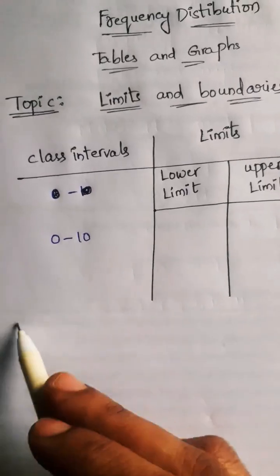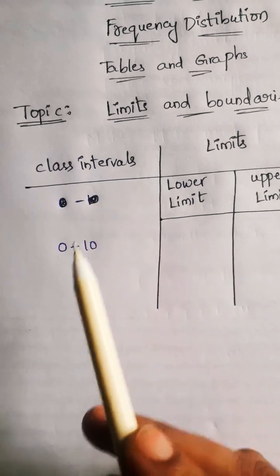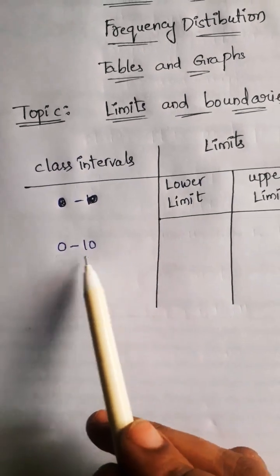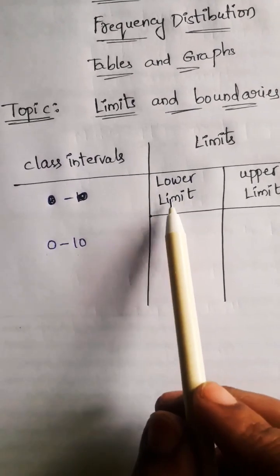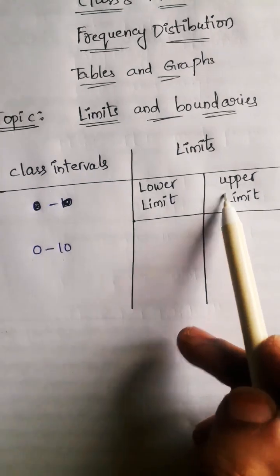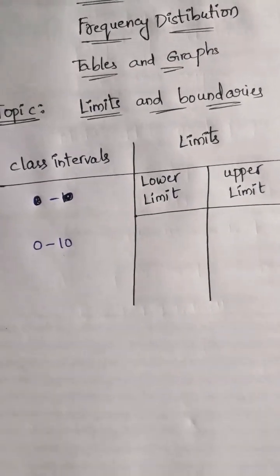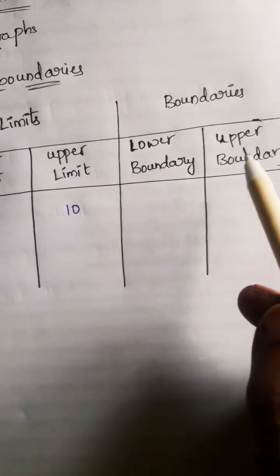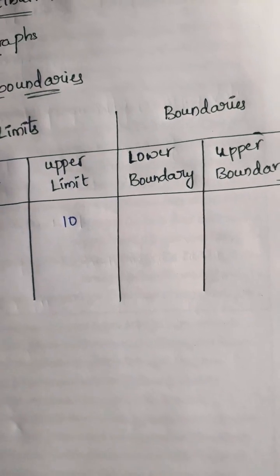Let's take the class interval 0 to 10 as an example. Within this class interval, the lower limit is 0 and the upper limit is 10. Next, let's look at how to find the lower boundary and upper boundary.